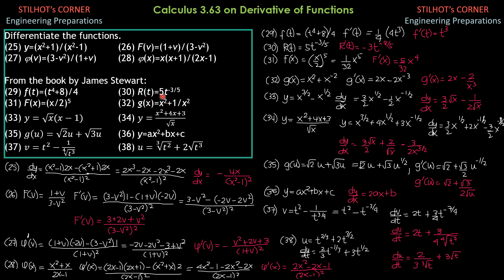Problem 30: R(t) = 5t^(-3/5). Applying the power rule, R′(t) = 5 × (-3/5) × t^(-3/5 - 1) = 5 × (-3/5) × t^(-8/5). Since 5 times -3/5 equals -3, R′(t) = -3t^(-8/5).